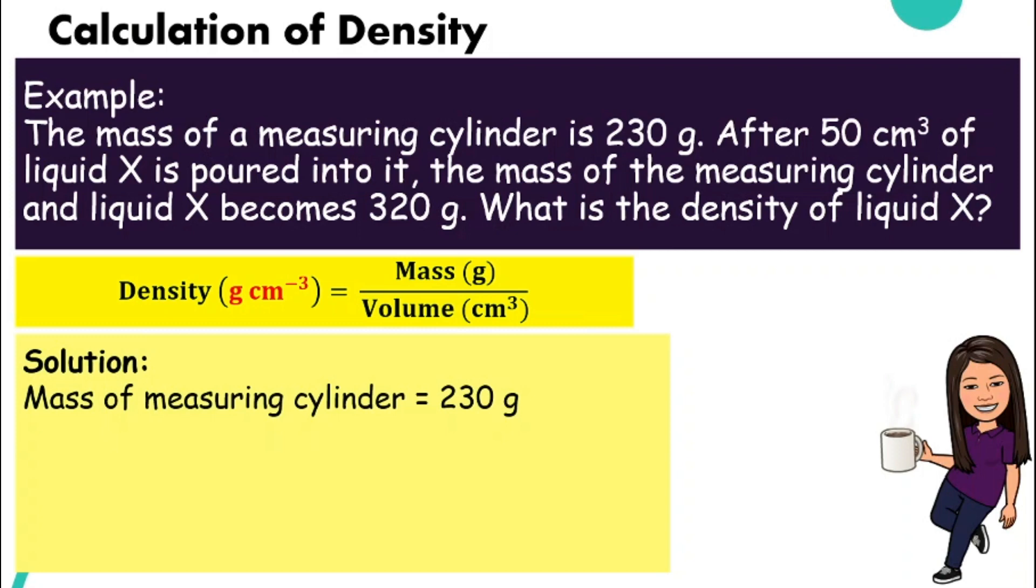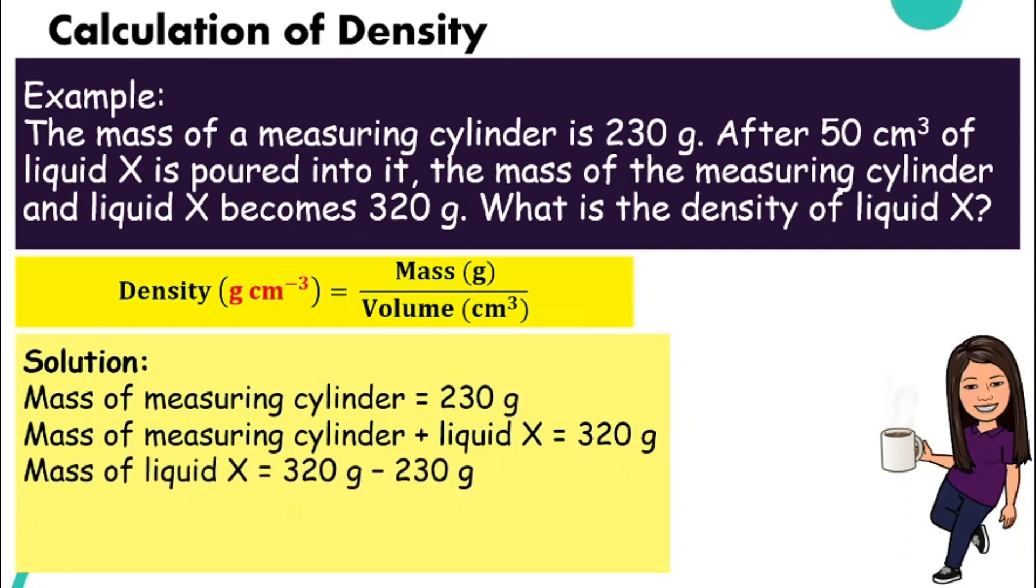But we do not want to find the density of the measuring cylinder. We want to find the density of liquid X. The question did not tell us the mass of the liquid X. But it does tell us that the mass of measuring cylinder plus liquid X will be 320 grams. So can you figure out how we can find the mass of liquid X?